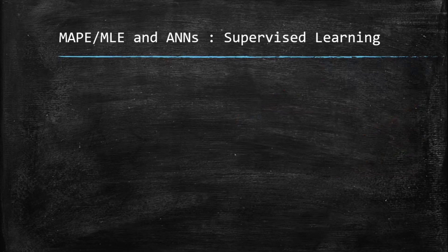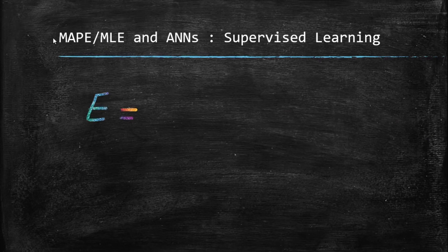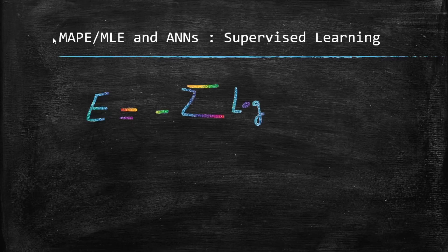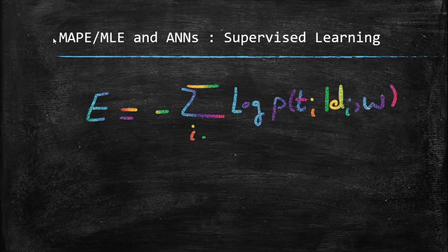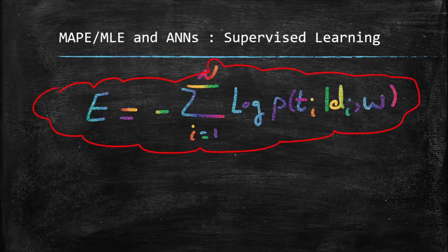In this course, we'll ignore the priors and focus on the likelihood bit. So the final formula is: Error = minus sigma (i=1 to n) of log P(ti | di, w). This, my friends, is the whole story — the way error functions are born from this point on. You can use this in any supervised learning algorithm you come up with in the future.